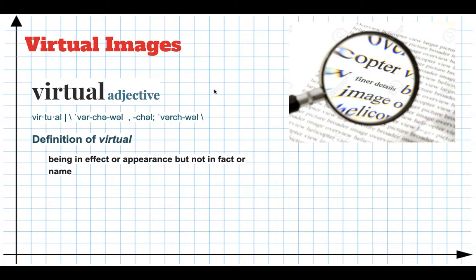The definition of virtual, as given by Webster, says it's being in effect or appearance, but not in fact or name. So when we say we are going to virtual school, it doesn't mean we're actually going to a real school. We're going to something that has the appearance of school — there's a teacher, they're giving lessons, they're collecting homework — but there isn't a school in the physical, traditional sense. It's just sort of the appearance of school. And virtual images have the exact same meaning.